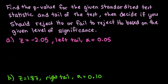For this video, I want to show you how to find a p-value when you're dealing with a z-test for the given standardized test statistic and tail of the test. We'll also decide if we should reject the null hypothesis or fail to reject the null hypothesis based on the given level of significance. The level of significance is denoted by alpha.